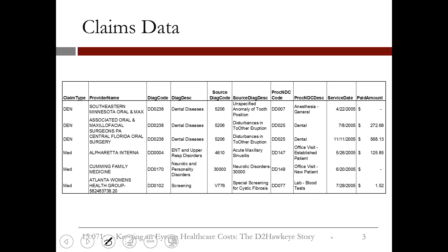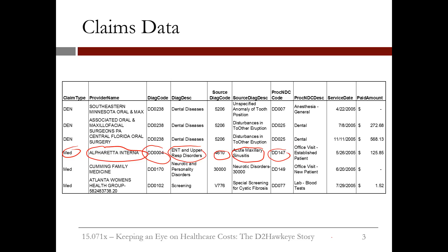Let me give you some examples on claims data. This shows six different claims. This is the provider's name and the corresponding diagnostic code — this is about upper respiratory disorders. This is another code associated with diagnosis, and this is the scientific term for the diagnosis. This was an office visit with an established patient, along with the date and the amount of money claimed by the physician.